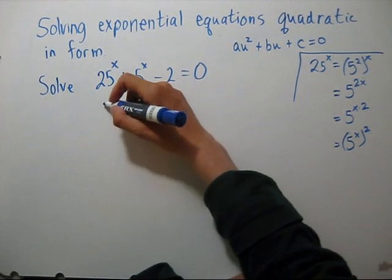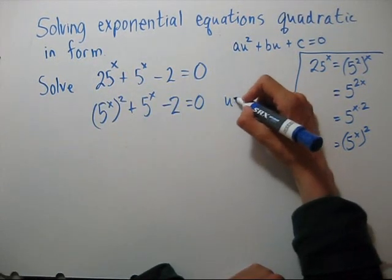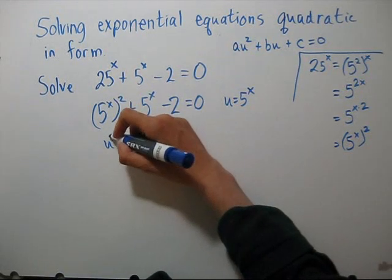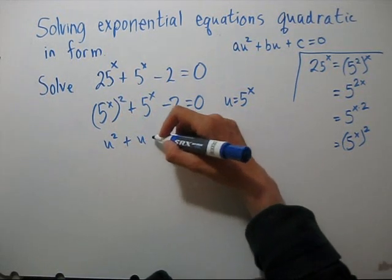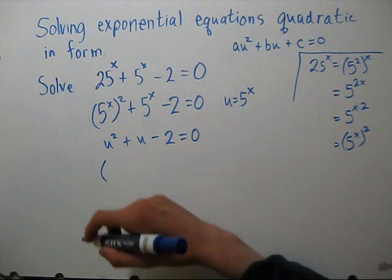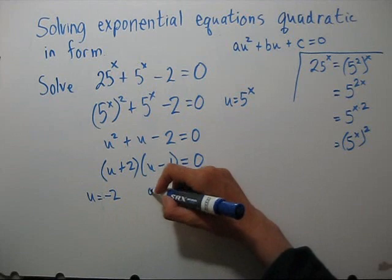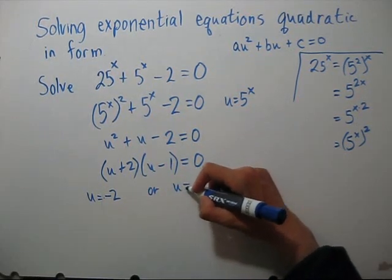Let's rewrite this now. If we let u equal 5 to the x, we'll have an equation that's quadratic in form. Let's solve it. It factors nicely, so we have that u equals negative 2 or u equals 1.